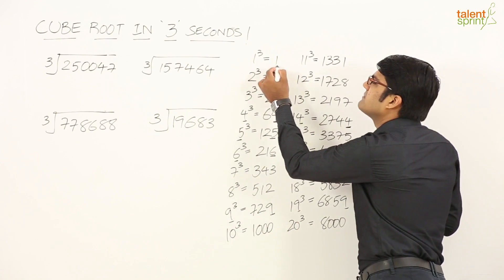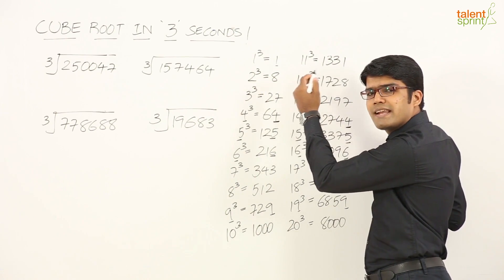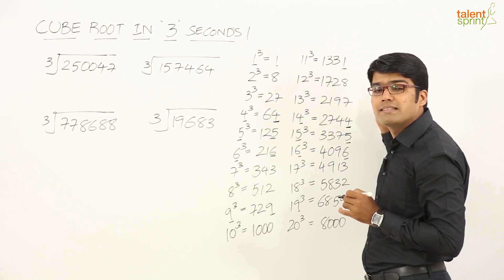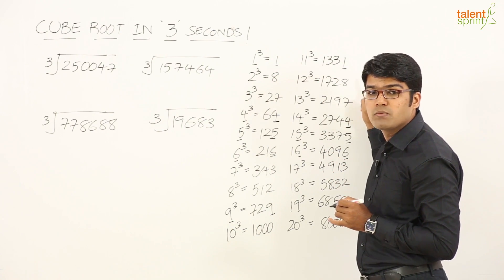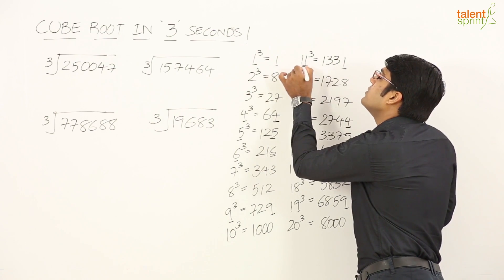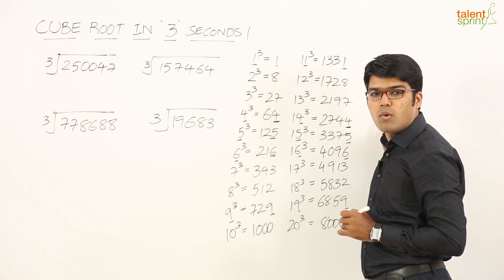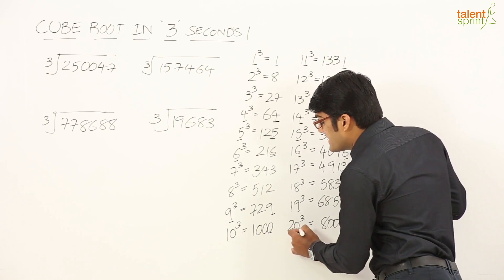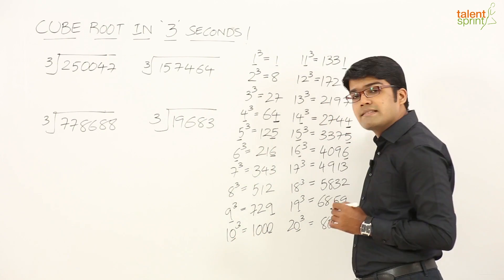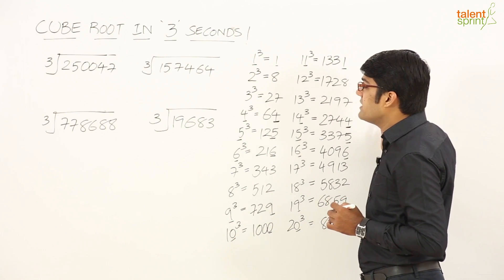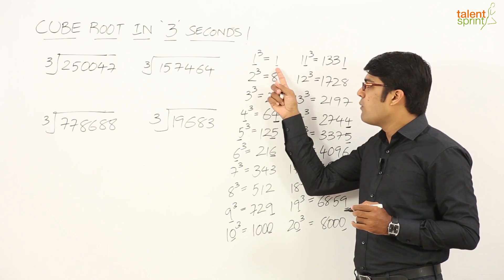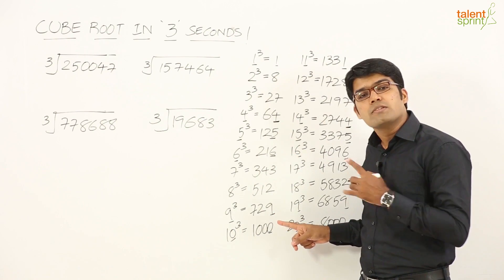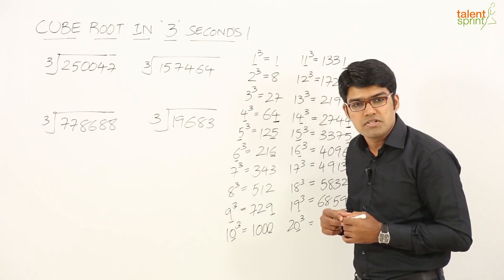Look at 1 — it ends in 1 and its cube root is 1. Similarly, 1331 ends in 1, so its cube root also ends in 1. And when a number ends in 0, its cube root also ends in 0. So the very important point here is: when a number ends in 1, 4, 5, 6, 9, or 0, its cube root also ends with the same digit.